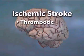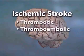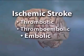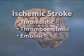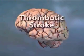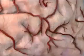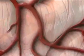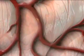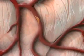There are three categories of ischemic stroke: thrombotic, thromboembolic, and embolic. A thrombotic stroke occurs when flow in a blood vessel in the brain is obstructed by arteriosclerosis.